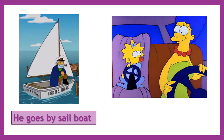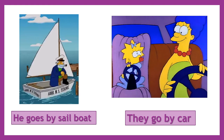Next, take a look at this image. Here we have two people and they are driving a car. Here we can create this sentence: they go by car. Because we have two people, we have to use the pronoun they. If we have the pronoun they, we have to use the verb go. We also have to use the word 'by' in any sentence. And finally, the means of transport is a car.